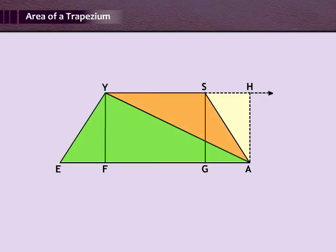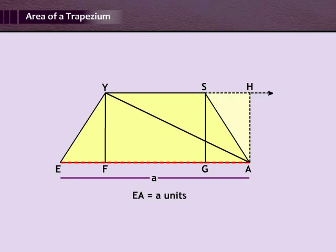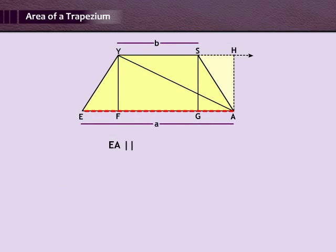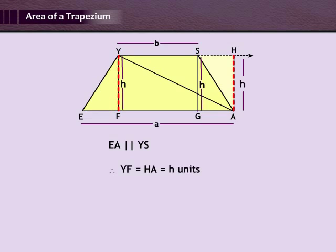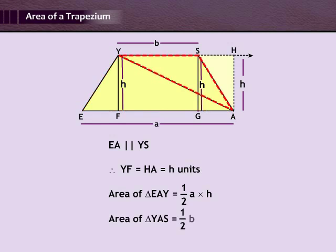Divide this trapezium into two triangles by drawing a diagonal YA. One triangle has base EA, where EA is equal to A units. The other triangle has base YS, where YS is equal to B units. We know EA is parallel to YS, so the distance between them, YF equal to HA, is equal to H units.